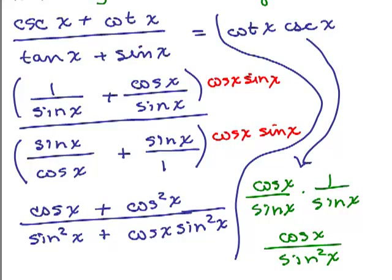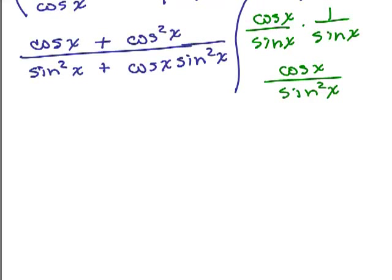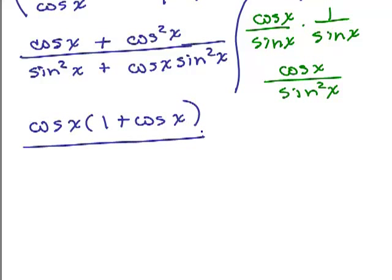So I'm kind of looking at both of them and seeing if I can finagle the two of them. How about if I factor out a cosine out of the numerator, what happens? Sorry, cosine out of the numerator here. I have cosine of X times 1 plus cosine of X.